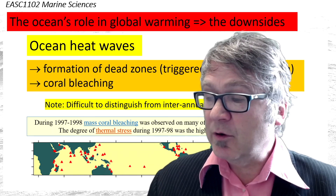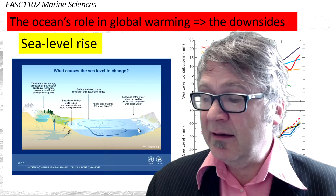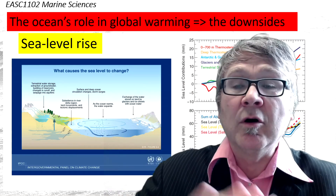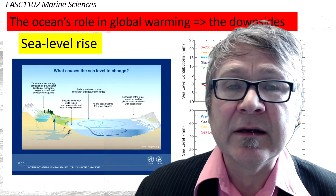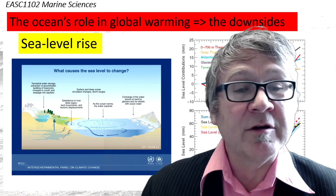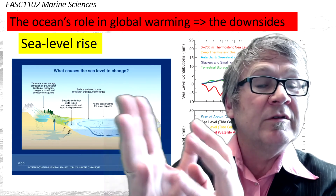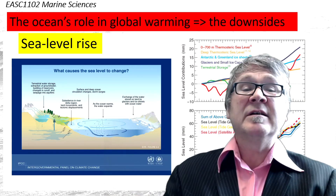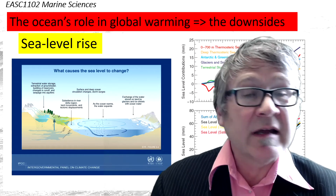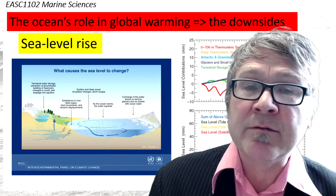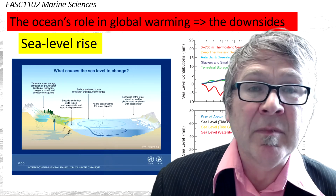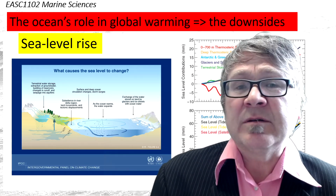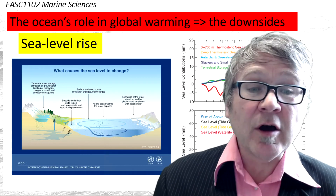The last feature I want to mention is sea level rise. I'm not going into the details — you can learn all of that in another topic called global climate change, which focuses on all these details. Sea level rise is another downside and has a direct impact on some low-lying islands, most importantly in the Pacific Ocean.